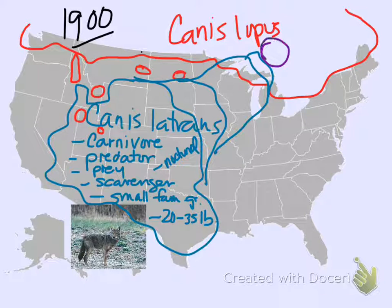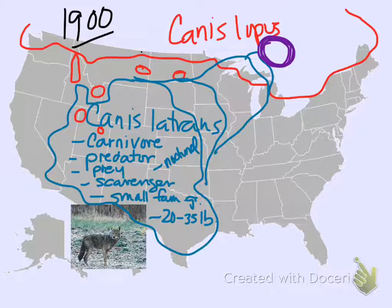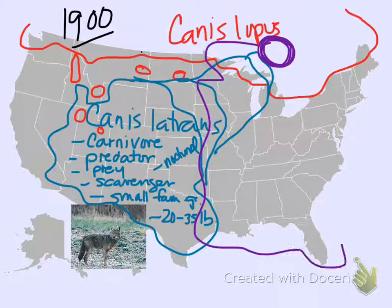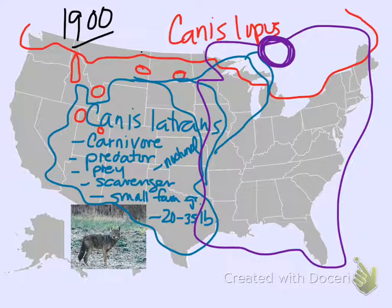There's a whole documentary on it. You've got some wolves. You've got some coyotes. And they do something that's never been done before — they interbreed. And what comes out of that interbreeding is the eastern coyote.